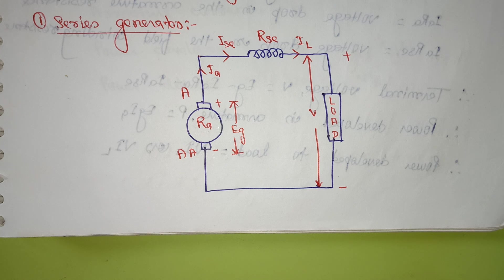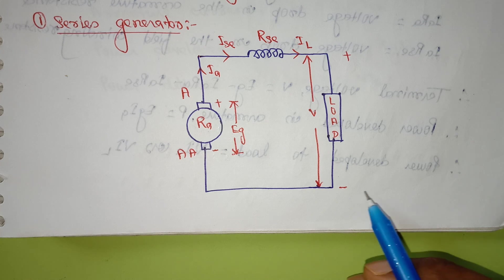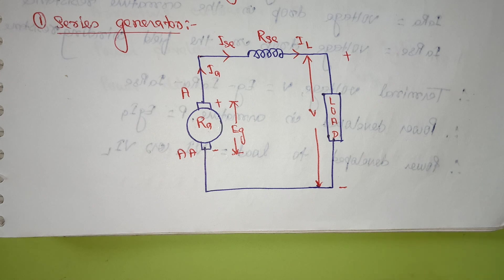Second point: residual flux is present in the poles. When the armature is rotated, a small EMF is produced in the armature winding because of the residual flux. Third point: this EMF produces a small field current in the field winding. Then the flux per pole increases, which increases the induced EMF, which further increases the field current.